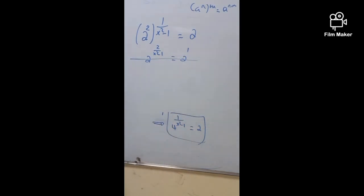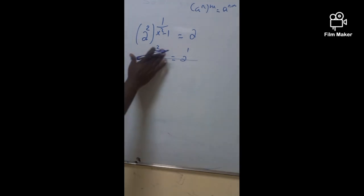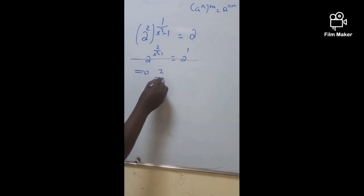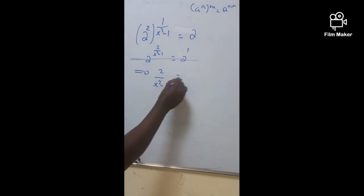So since if two exponents, expressions have the same base. That means for any two exponents, for them. If they have the same base, now we can equalize their exponents. And hence, this means that 2 over x square minus 1 is going to be 1.